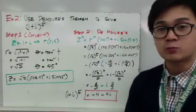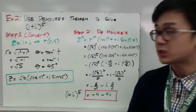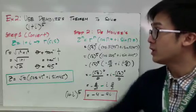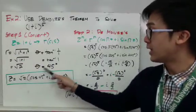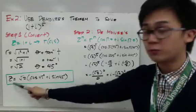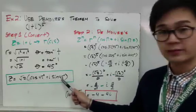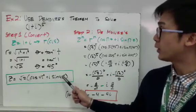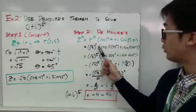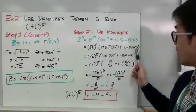Now let's use De Moivre's theorem to solve for 1 plus i raised to the 5th power. Step 1 is conversion: find r and theta so you can convert to trig form. r is equal to square root of 2, and theta equals 45 degrees. So we now have the trig form: square root of 2 times cosine 45 degrees plus i sine 45 degrees. Using De Moivre's theorem, we have square root of 2 raised to the 5th power, cosine of 5 times 45 degrees plus i sine of 5 times 45 degrees.